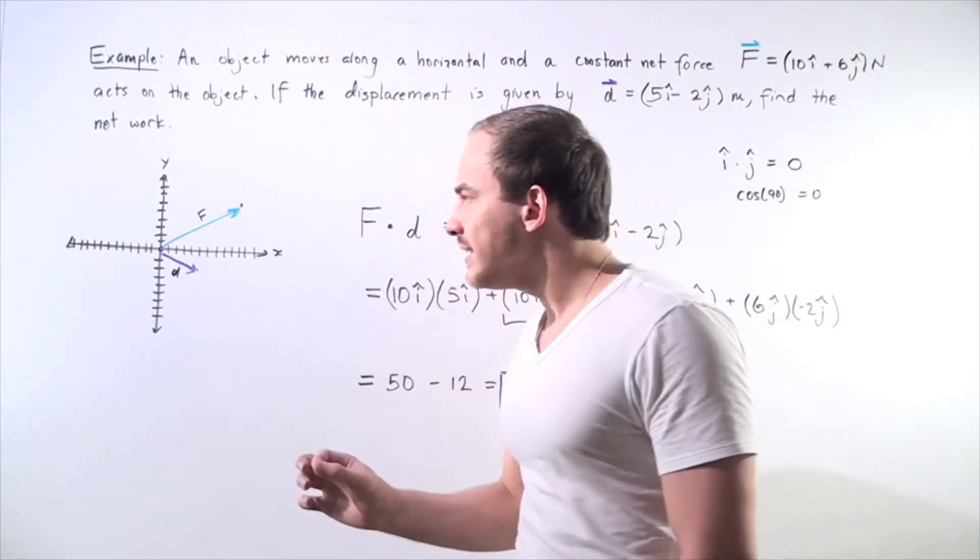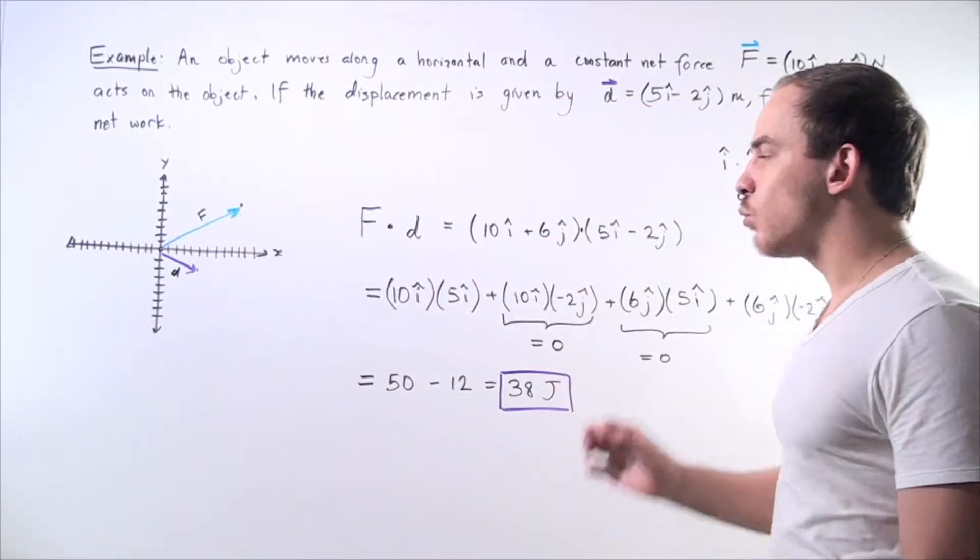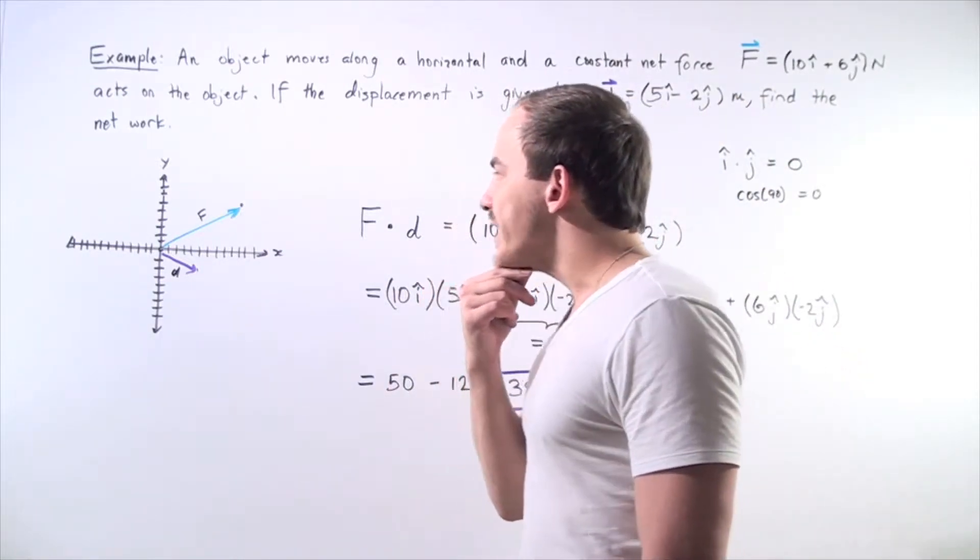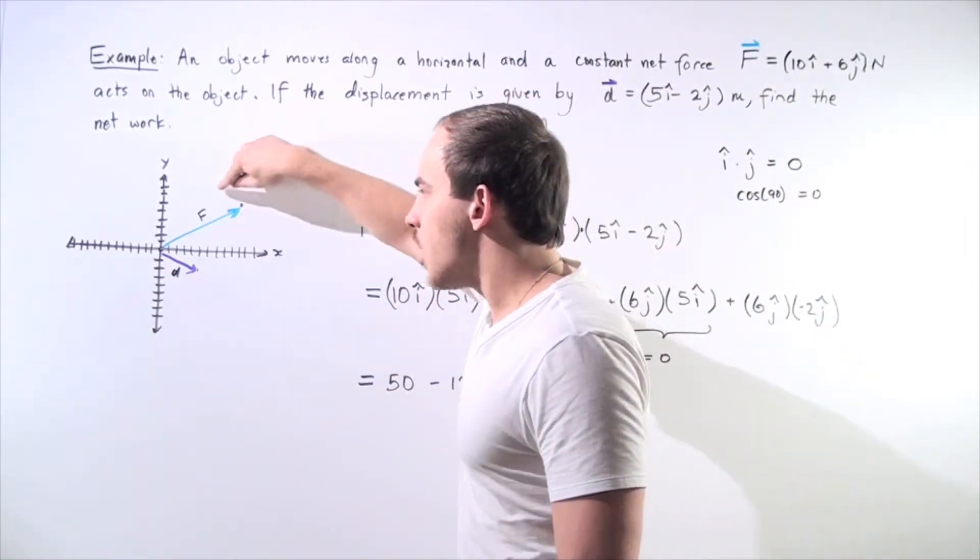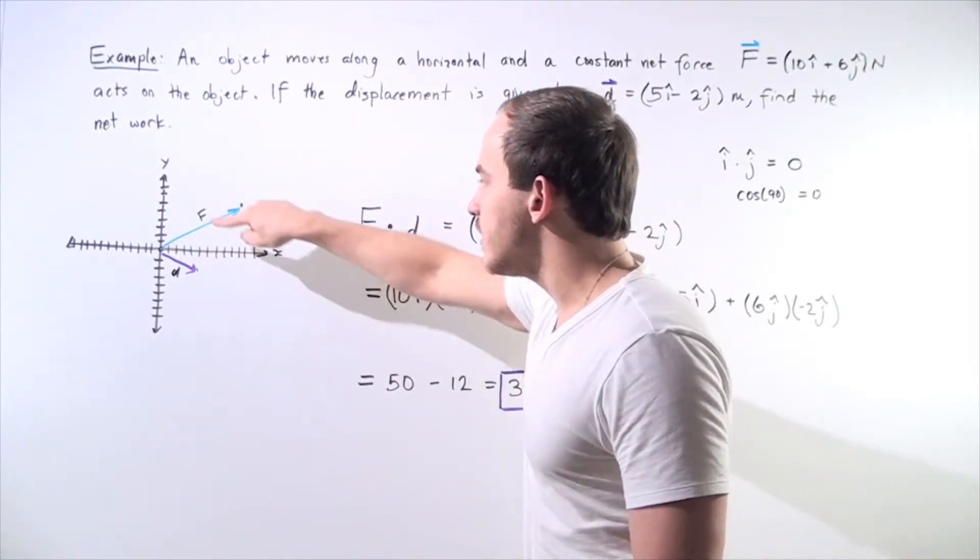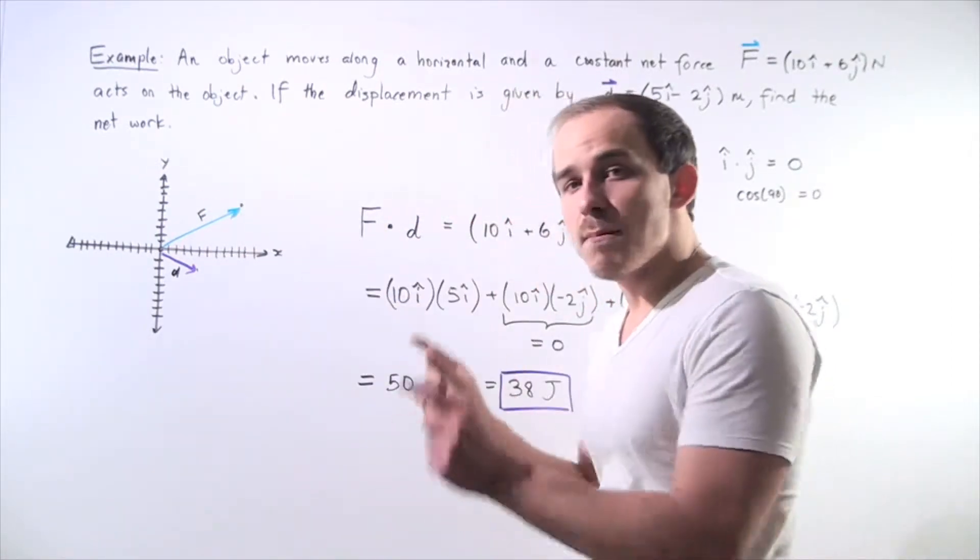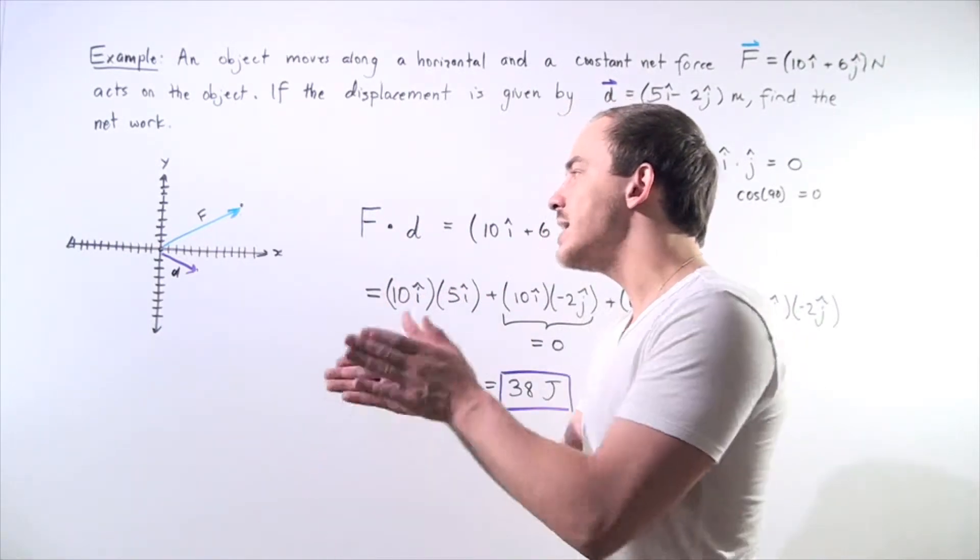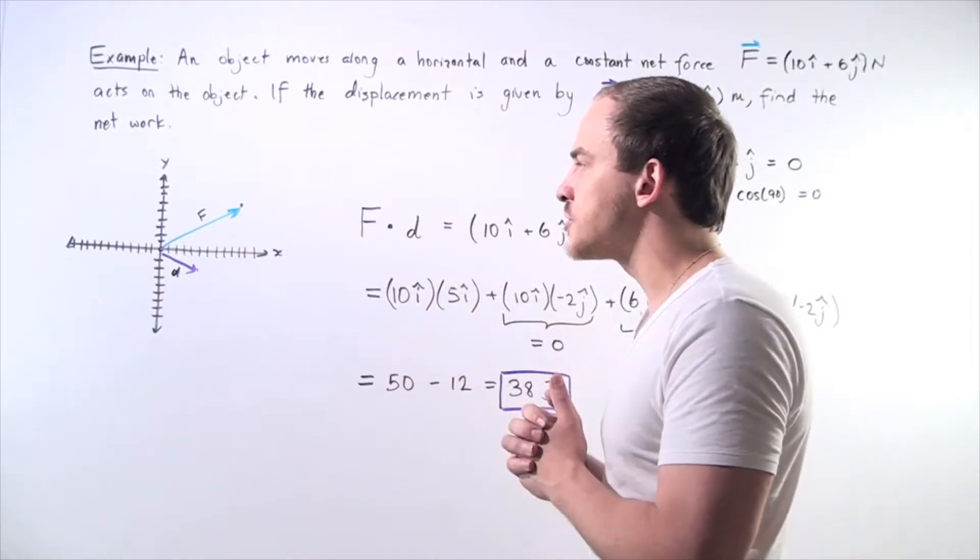So we can calculate the work done, the net work done one in two ways. We can either find the magnitude of each of these vectors, find the angle separating the two vectors and take the magnitudes, multiply them and multiply that out by the cosine of the angle between our two vectors.